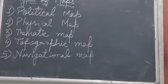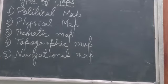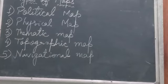Political map, Physical map, Thematic map, Topographic map and Navigational map. Today we will study the types of maps. The types of maps are also divided into 2 categories, that is large scale map and small scale map, bifurcated or divided on the basis of their scale.